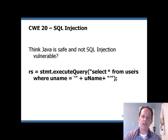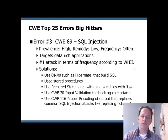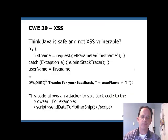Do you think Java is safe and not SQL injection vulnerable? Take a look at this statement. If a user could craft a username that we pass into this SQL statement, instead of just selecting information for that particular username, we could craft a statement that would list all the contents of a database for an attacker. SQL injection is the number one attack in terms of frequency according to the World Hackers Internet database. It targets data-rich applications, which is what most web applications are nowadays. Do you think Java is safe and not cross-site scripting vulnerable? Take a look at this code sample in Java.